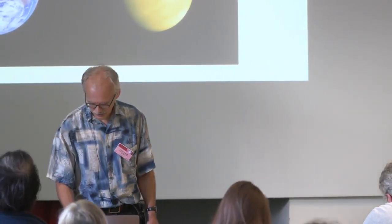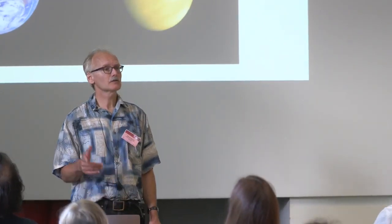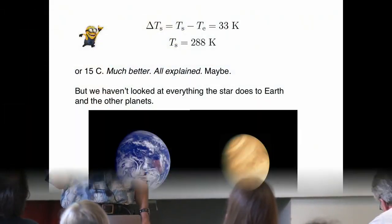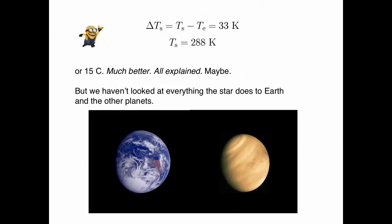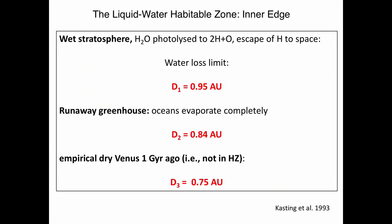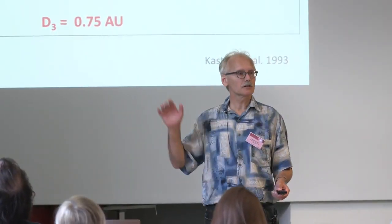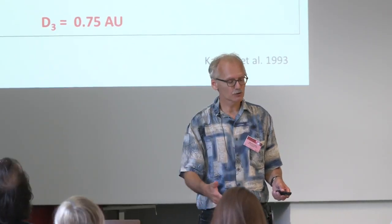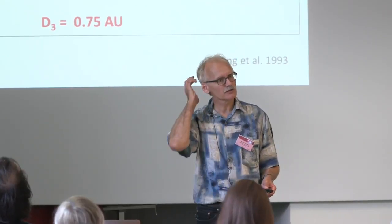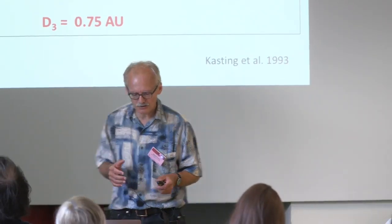The rest of my talk shows how much else can go wrong. Let me discuss the work by Jim Kasting and colleagues from a 1993 paper on where the habitable zone limits lie. Where can you keep liquid water based on detailed calculations, really taking atmospheric composition into account?